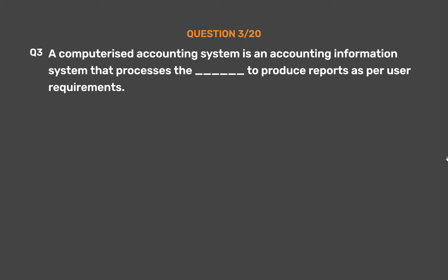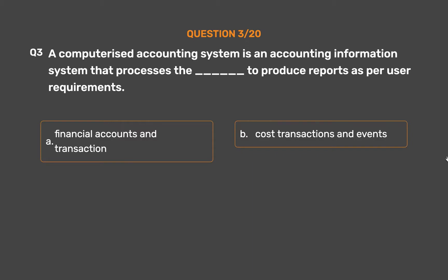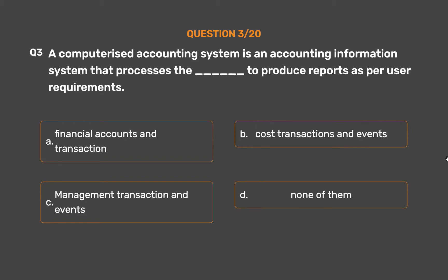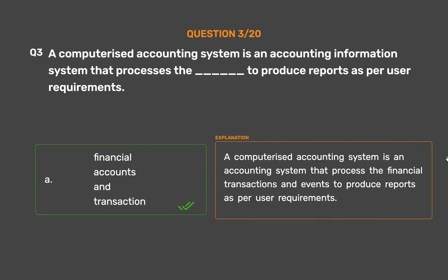Question number 3. A computerized accounting system is an accounting information system that processes the __ to produce reports as per user requirements. Option A: Financial accounts and transactions. Option B: Cost transactions and events. Option C: Management transactions and events. Option D: None of them. The correct answer is Option A: Financial accounts and transactions. A computerized accounting system processes the financial transactions and events to produce reports as per user requirements.